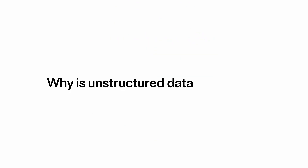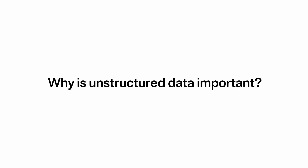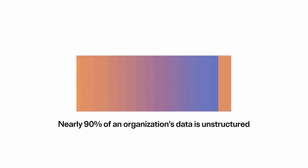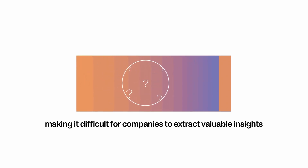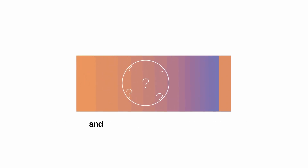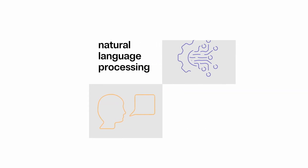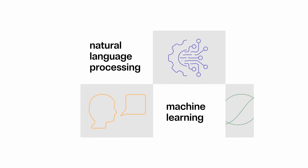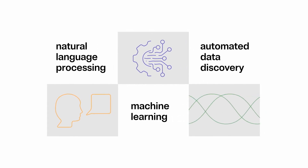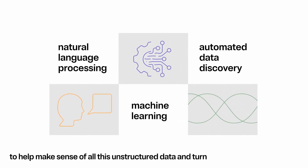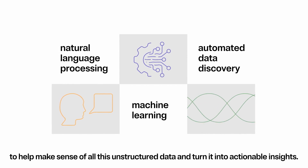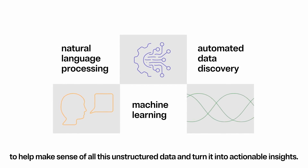So why is unstructured data important? Nearly 90% of an organization's data is unstructured, making it difficult for companies to extract valuable insights and make sense of this information. That's where technologies like natural language processing, machine learning, and automated data discovery come in to help make sense of all of this unstructured data and turn it into actionable insights.